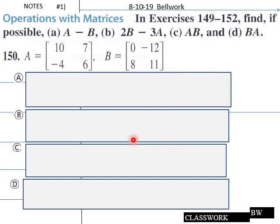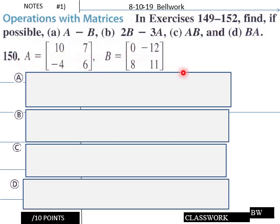Today's bedwork: find, if possible, A minus B, 2B minus 3A, AB, and BA, using the given matrices A and B. Teachers, give your students about five or six minutes for that. See you in five or six minutes.